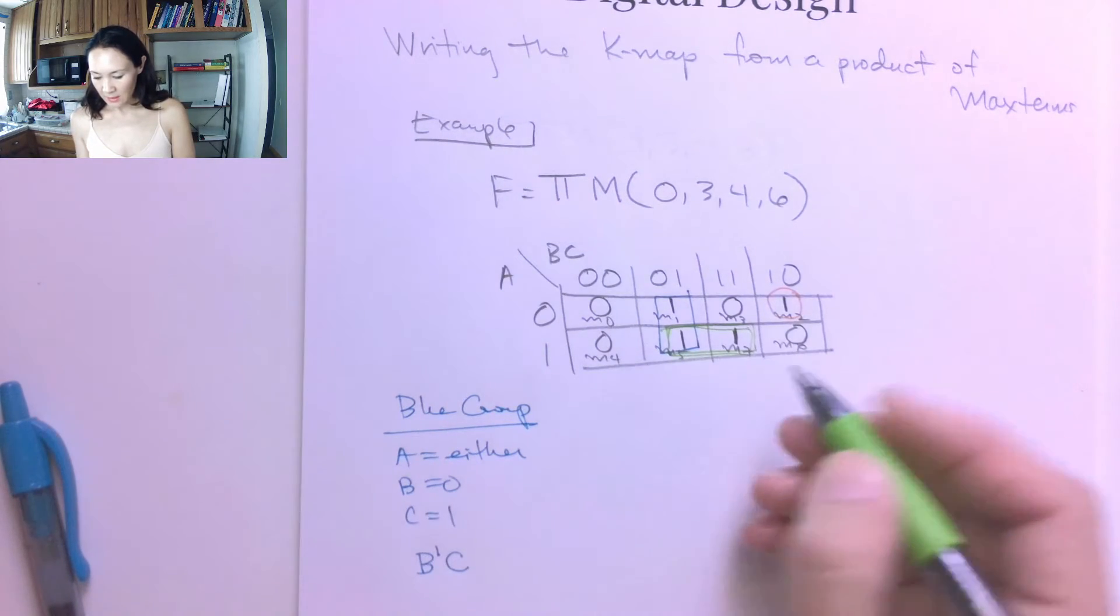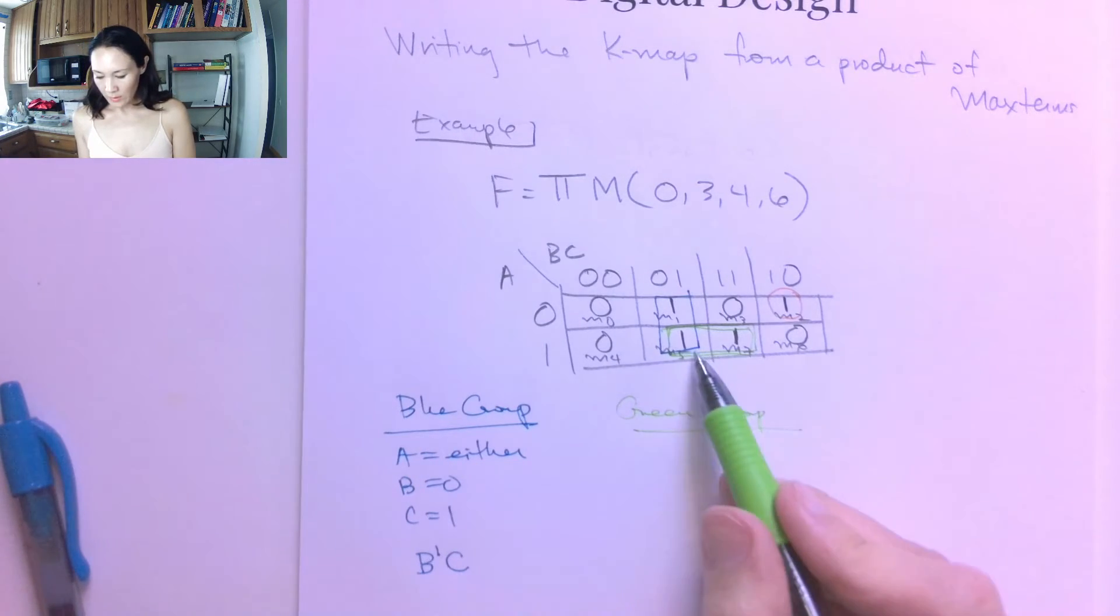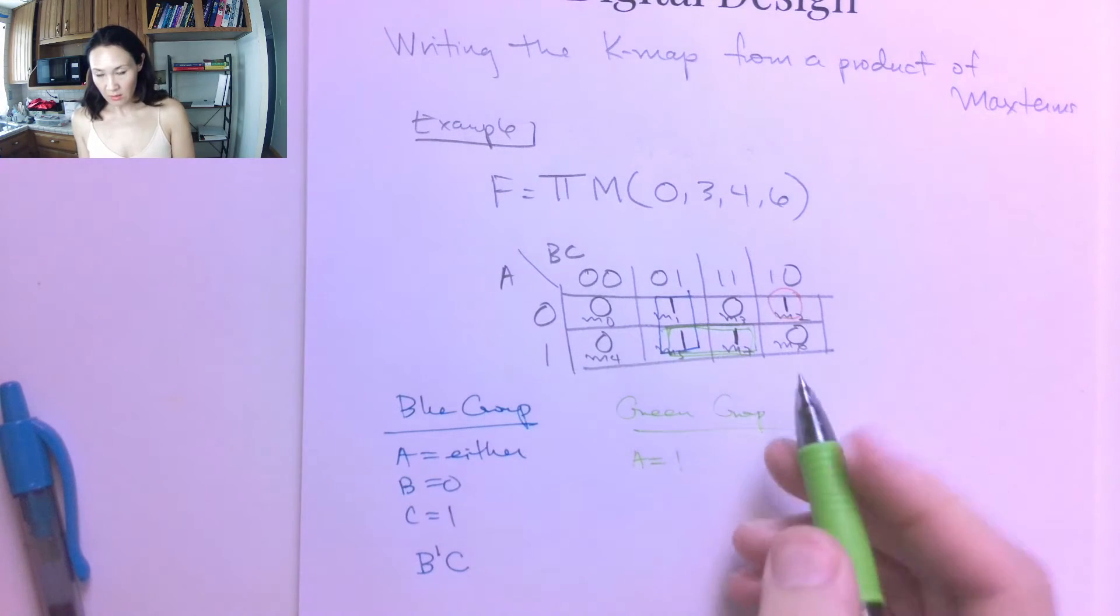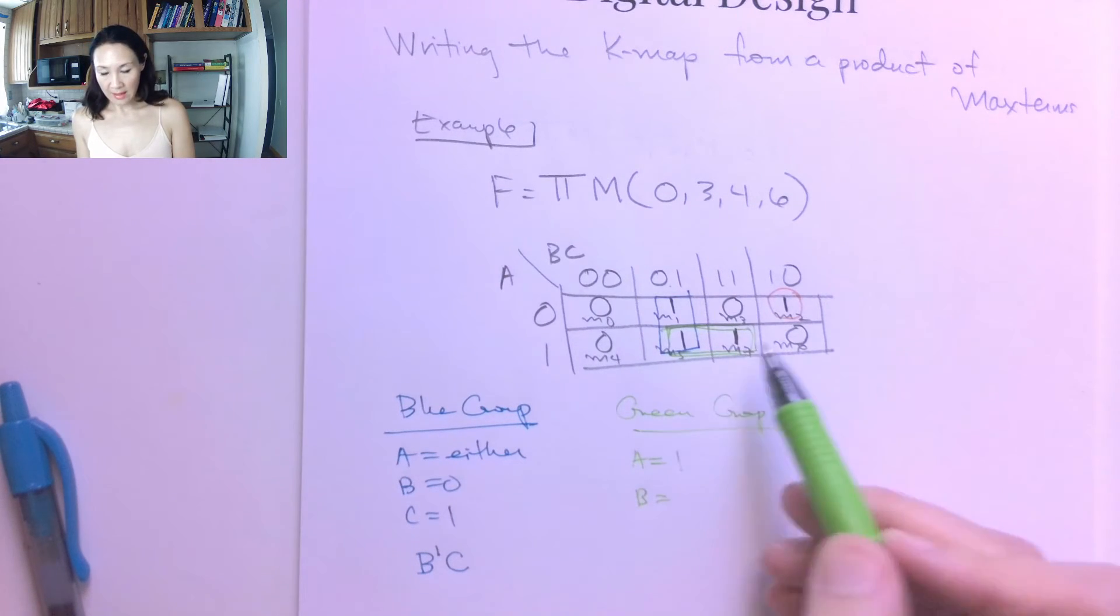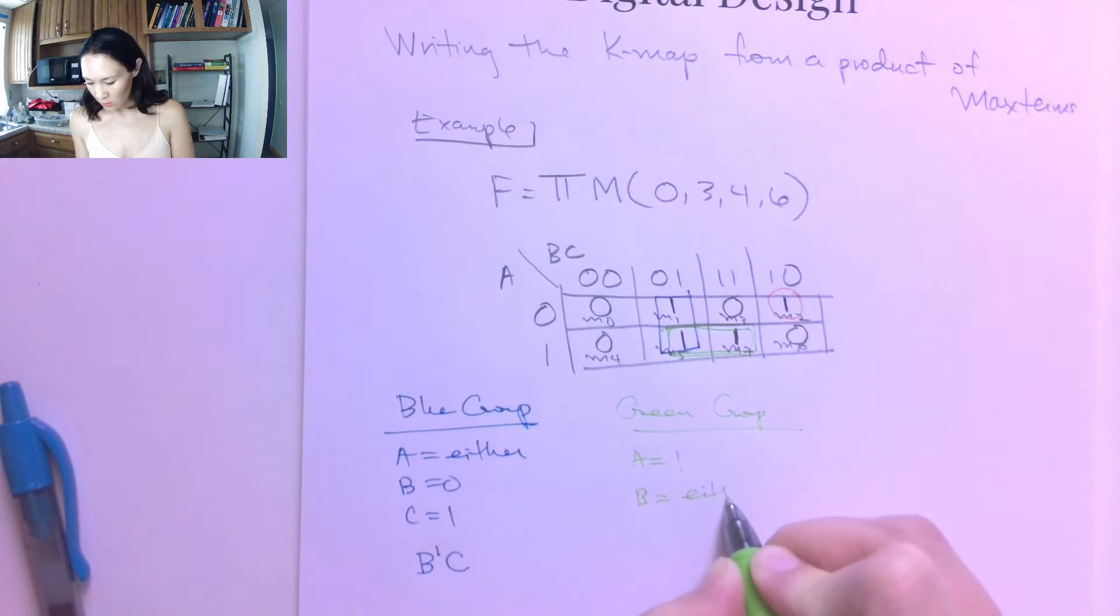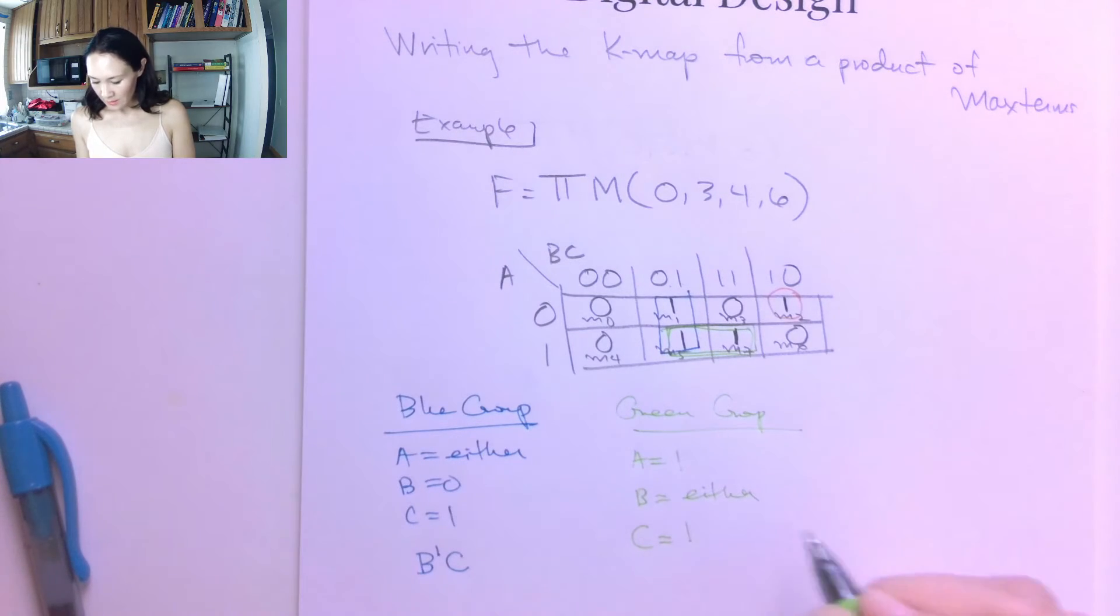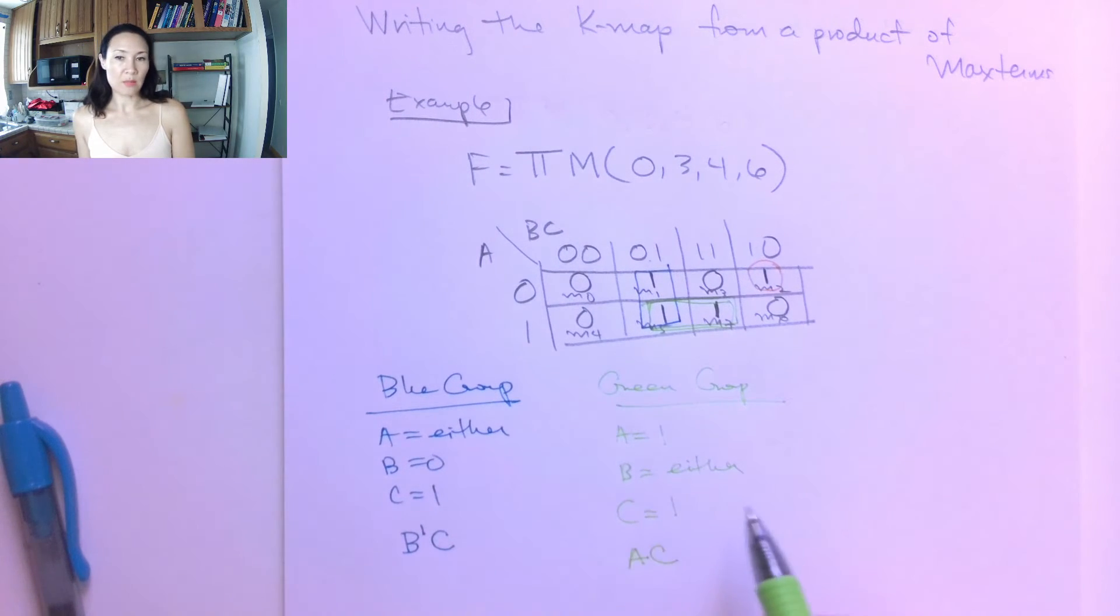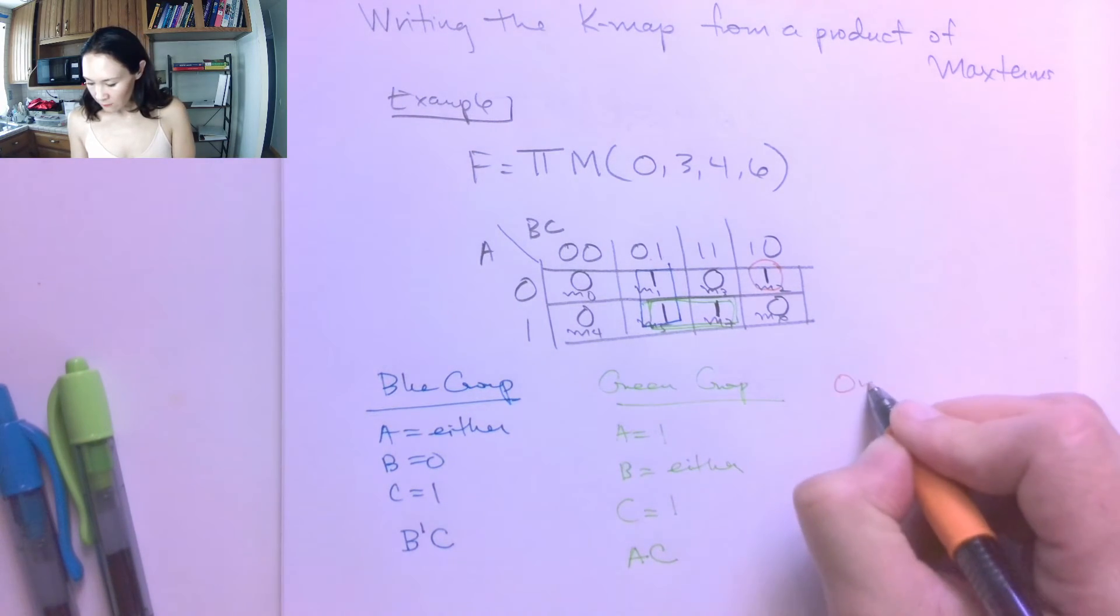So next, this green grouping here, what's true for these ones? Well, we have A equals 1, because that's this row here. And we have B can be either 0 or 1, and we'll have a 1 in the green group. And we have C has to be 1. So this literal representation is A and C. We don't need the B in there, because it can be either 0 or 1, so we can reduce it out.